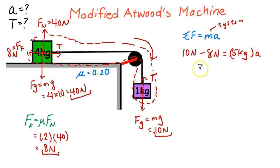And then times A. So I get 2 equals 5A, and A is 2 divided by 5, which we get 0.4 meters per second squared.